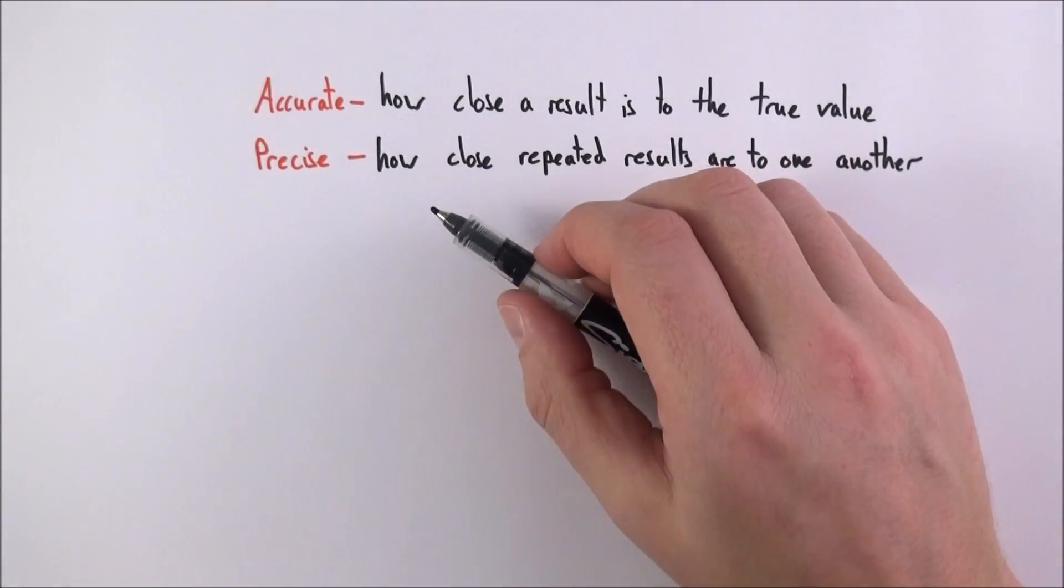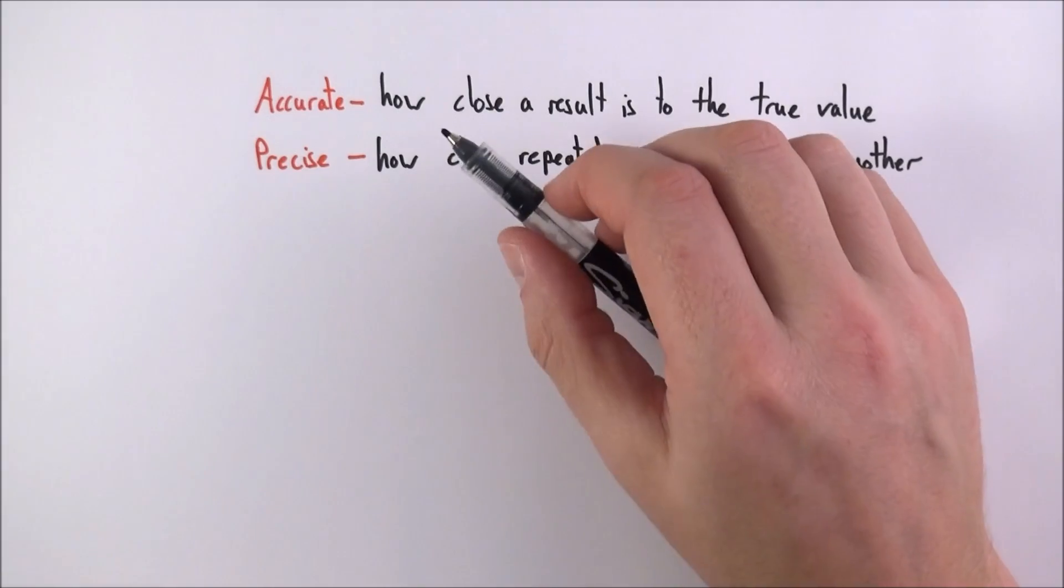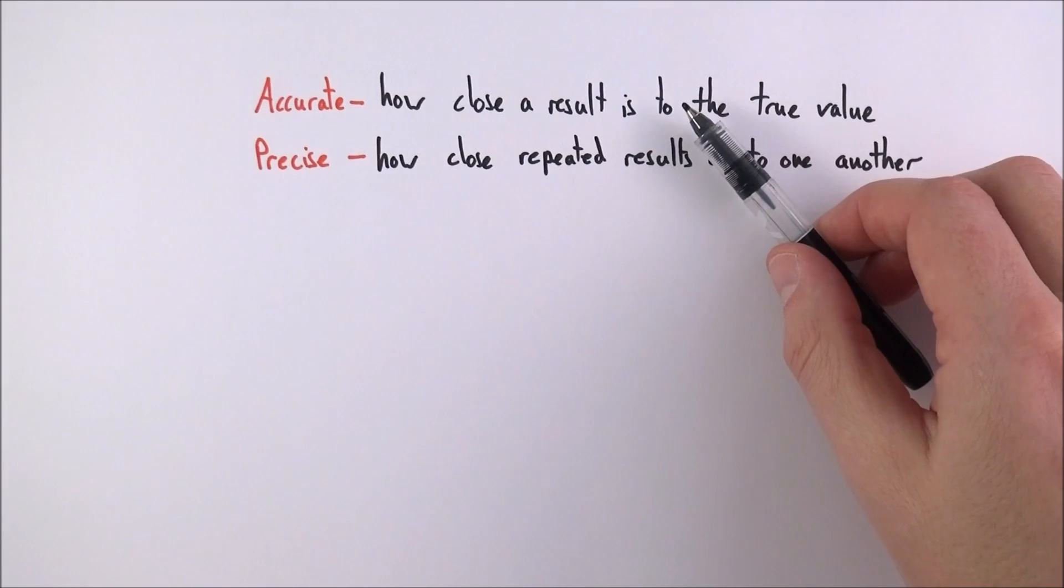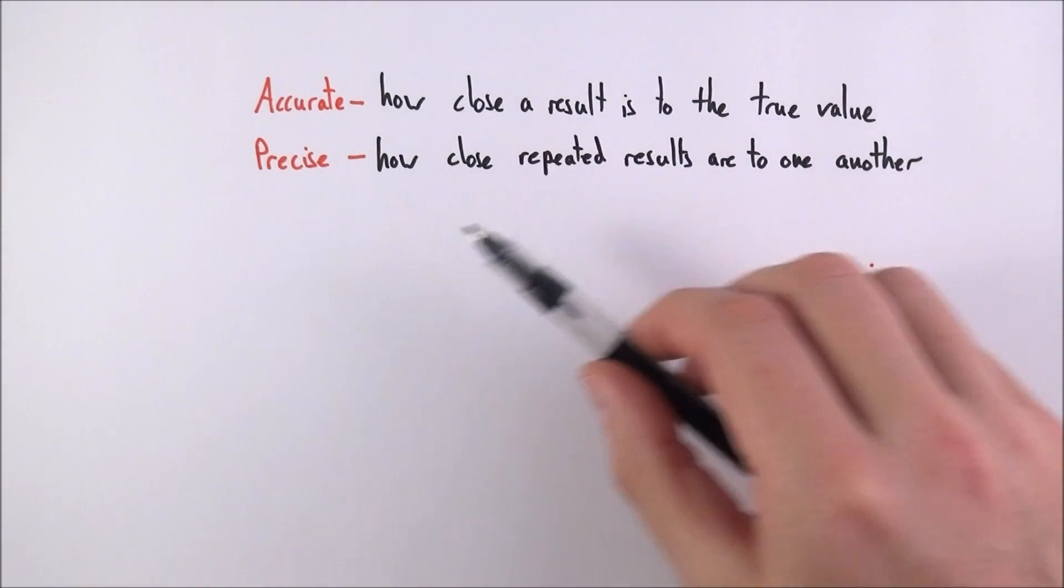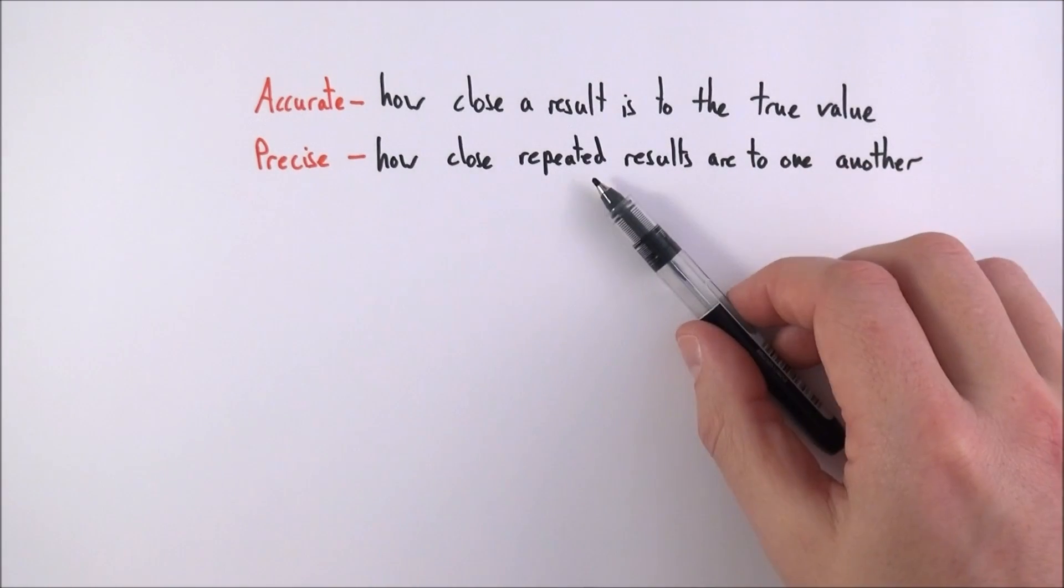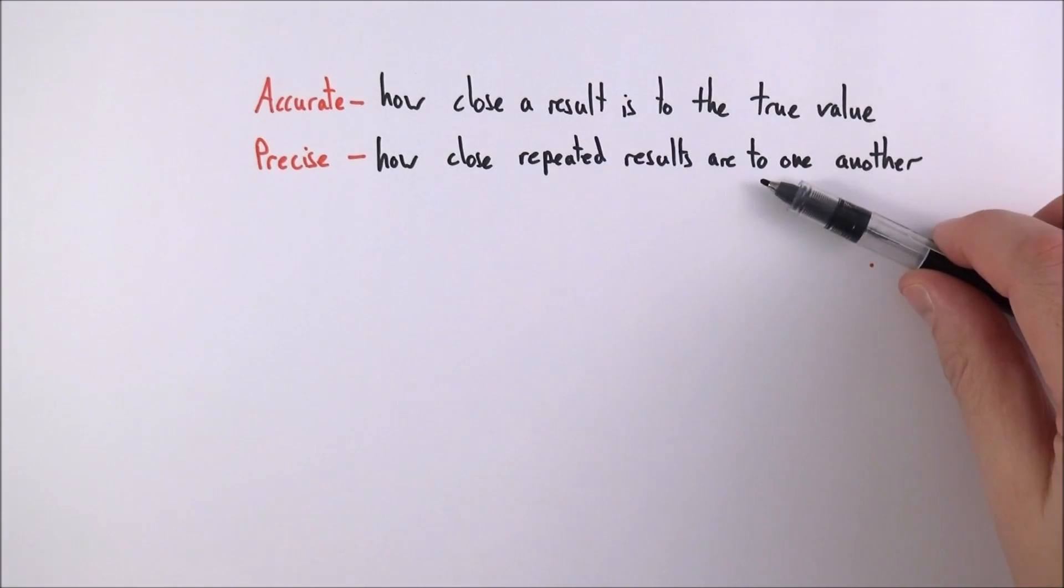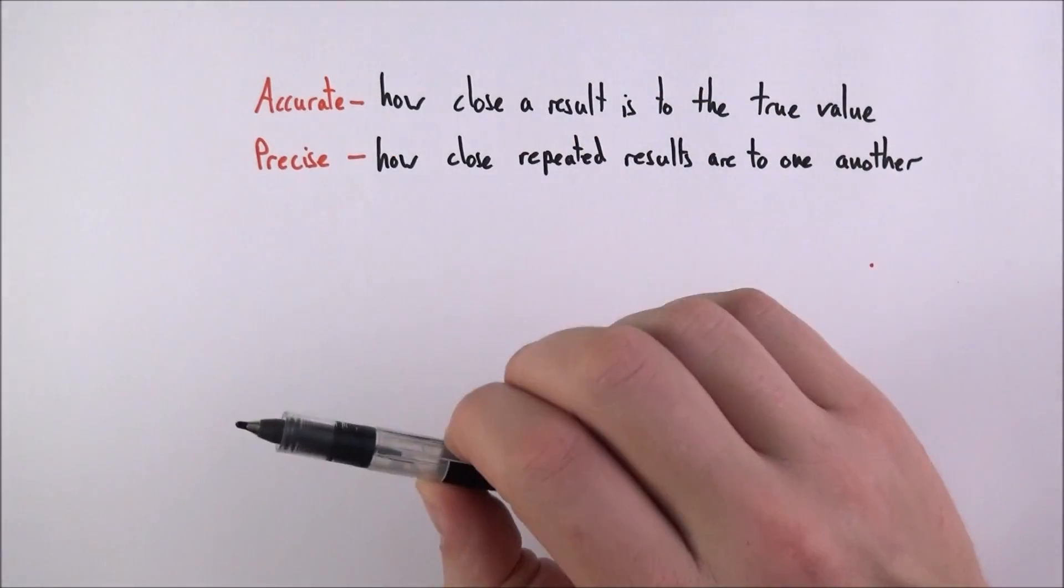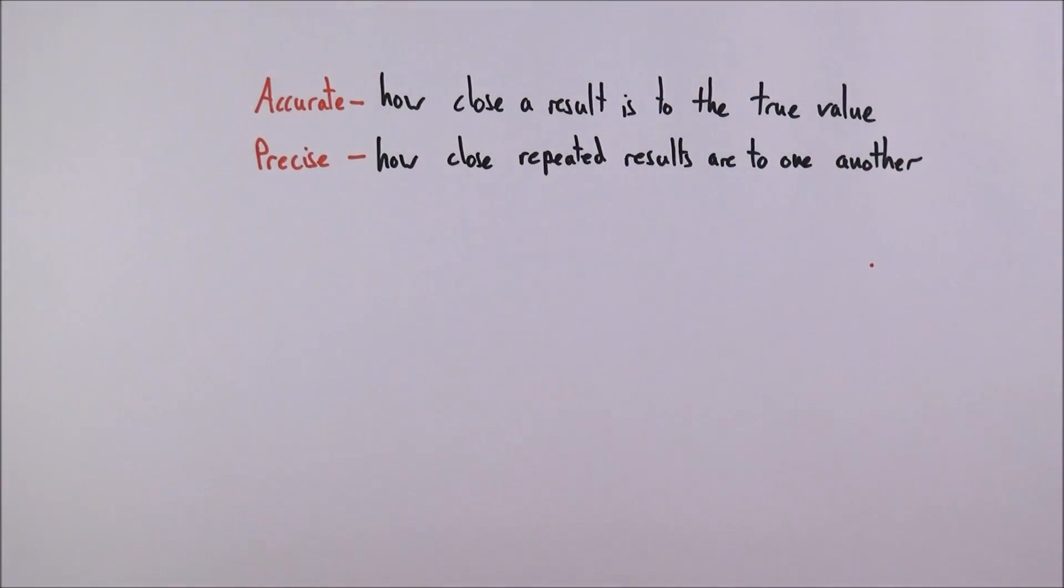To try and summarize that as briefly as possible: an accurate result when you're doing an experiment is how close a result is to the true value, whereas precise results relate to how closely the repeated results are to one another, and it doesn't really matter if these precise results aren't accurate. Precision is completely separate to accuracy.